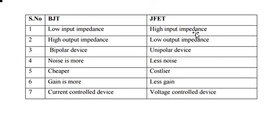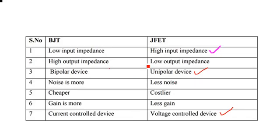High input impedance, low output impedance, unipolar device, less noise, costlier, less gain, voltage control device. High input impedance, unipolar device, and voltage control device are the most important points. Thank you.